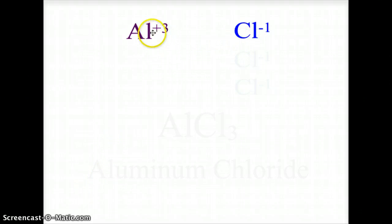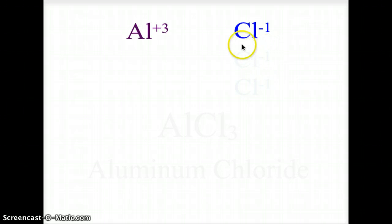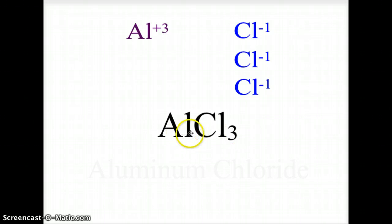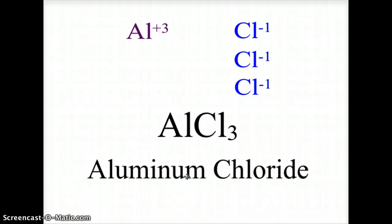Now let's look at aluminum and chlorine. Aluminum is a +3 cation and chlorine is a −1 anion. Because their charges are only opposite but not equal, we need to add more chlorine — three chlorine ions total — to balance the one aluminum ion. This gives us the formula AlCl3: three negative −1 chlorides balancing the one +3 aluminum. As with all binary compounds, we get aluminum chloride — the metal keeps its name and the nonmetal takes '-ide.'